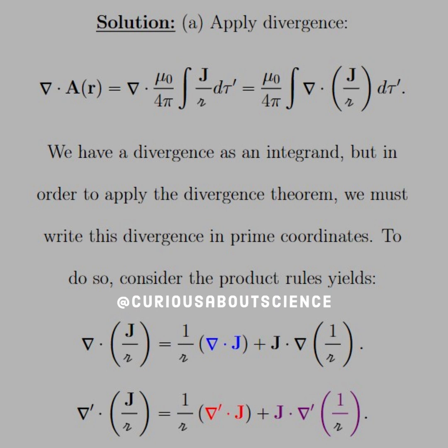How we do this is we write out the product rule for the divergence: del·j over r is equal to 1 over script r times the divergence of j plus j times the del of 1 over r. And now we do the same thing, but we apply the prime coordinate system.